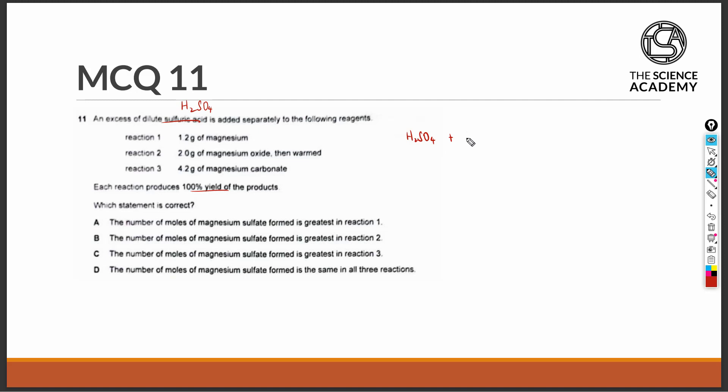In reaction 1, sulfuric acid is reacting with magnesium metal. This will give us a salt and hydrogen gas as a byproduct.